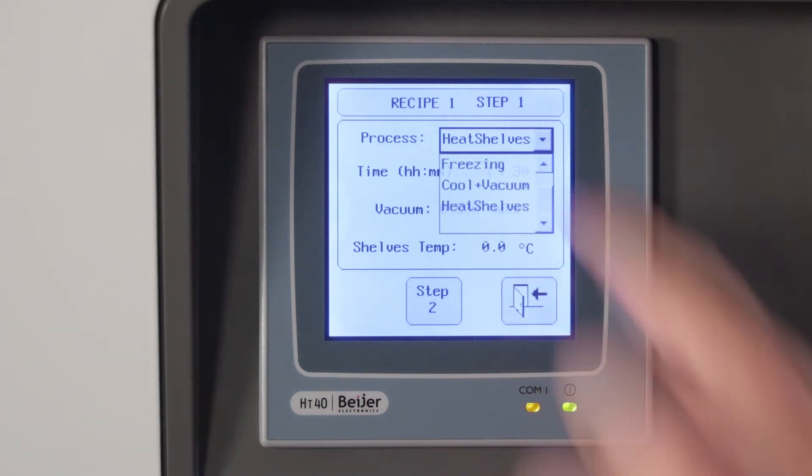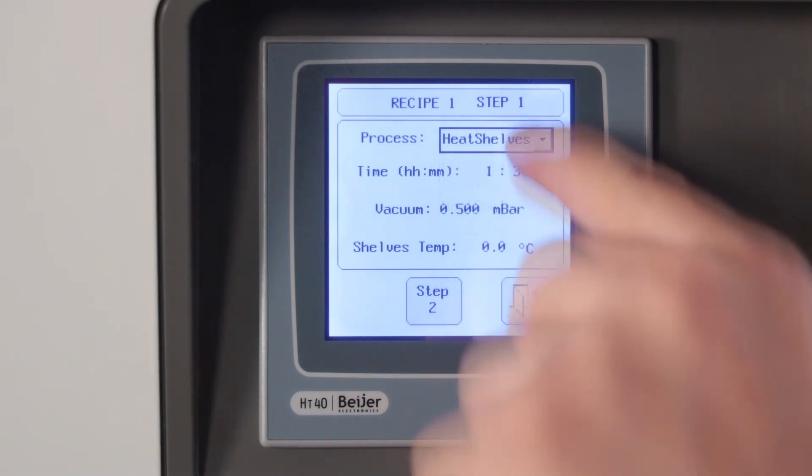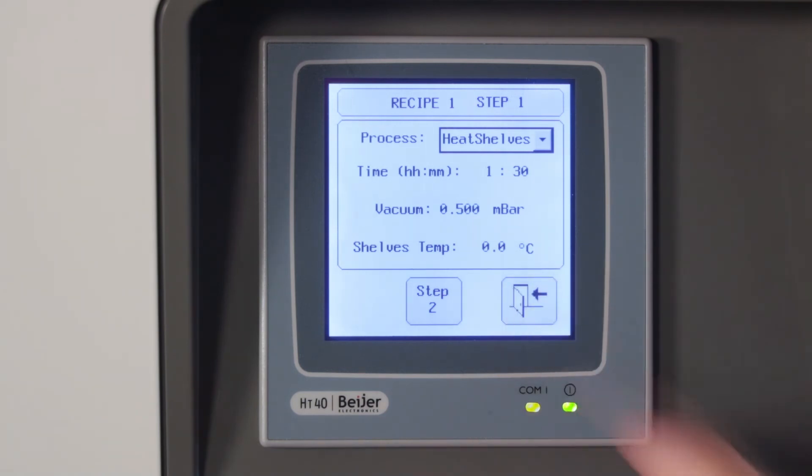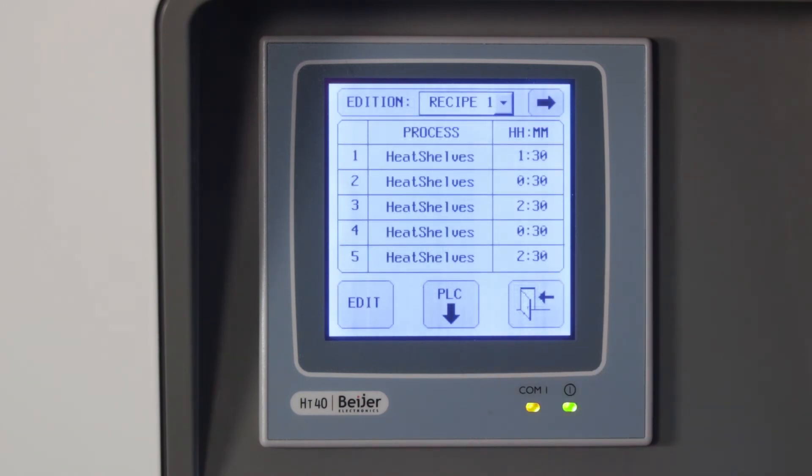In this screen, you can select the process and select the time, vacuum, and temperature set points. These recipes can be downloaded to the PLC.